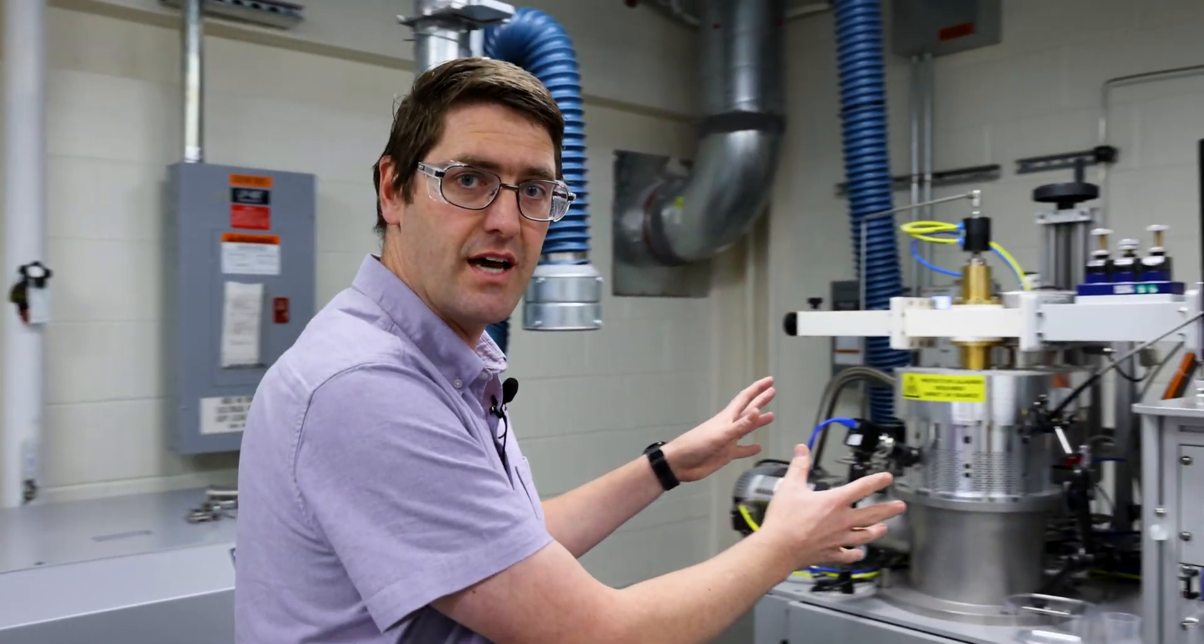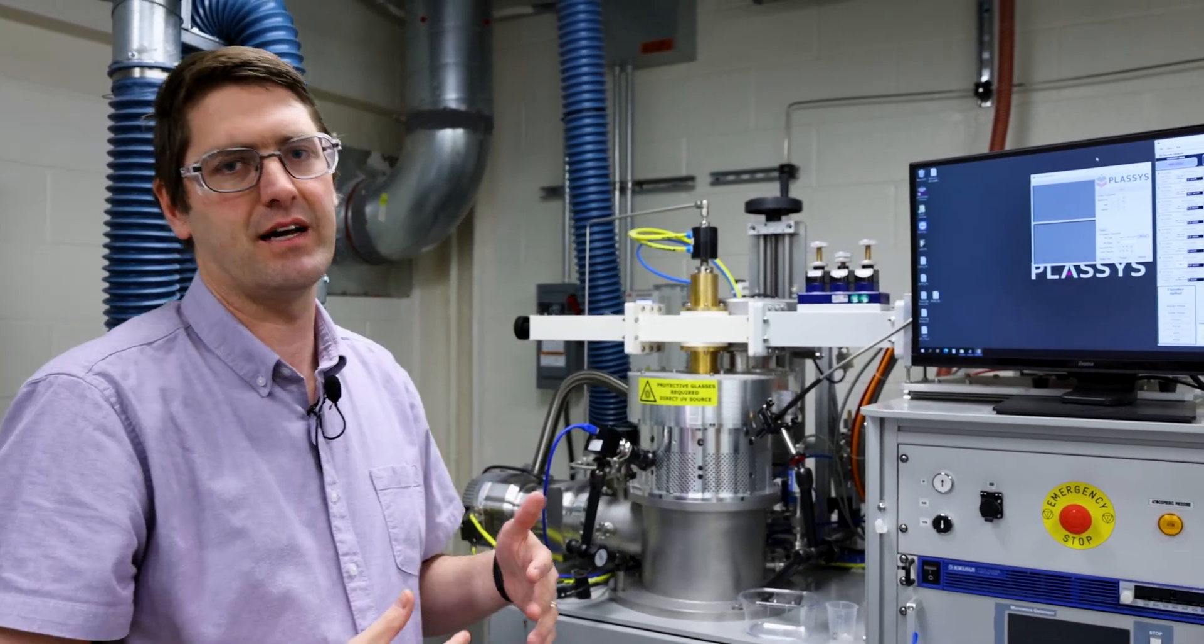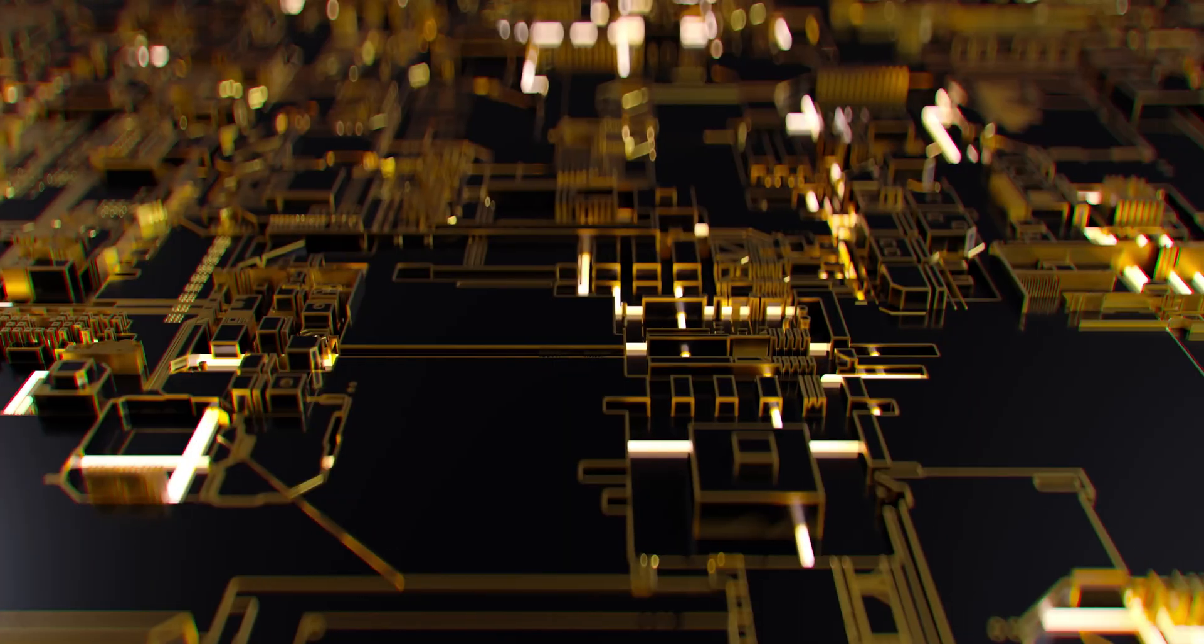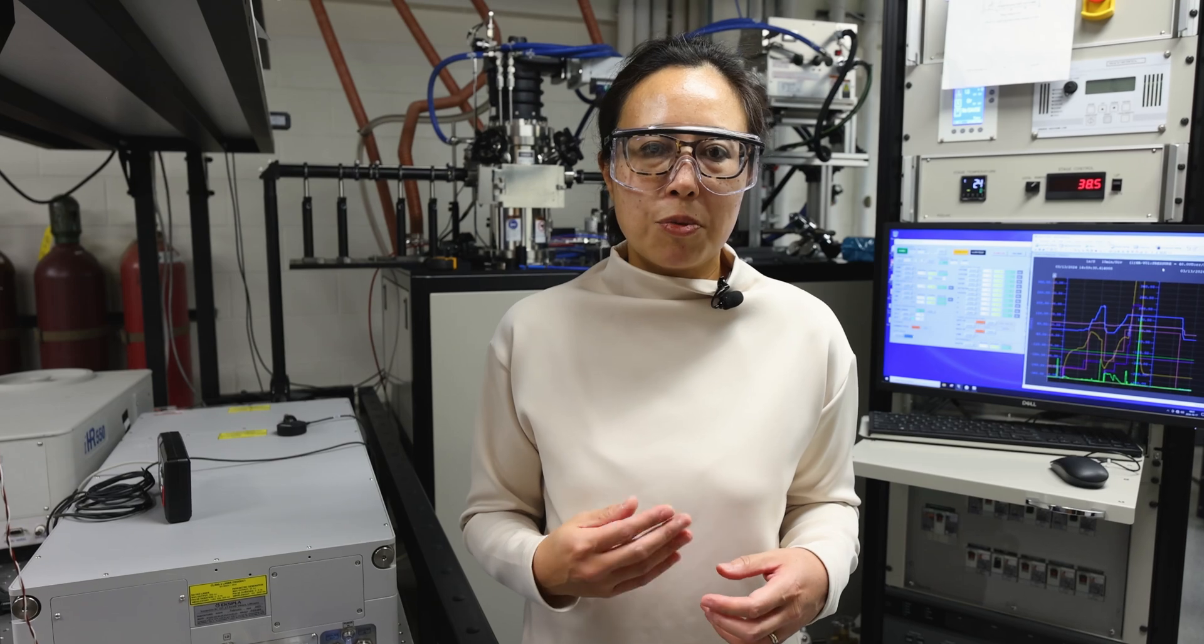In the second machine, we're deliberately adding different dopants. It looks the same, but we have different gases flowing in. We're deliberately doing that to change the properties of the diamond. When we combine these two things together, we can make some really interesting quantum and microelectronics devices. This is a critical step forward in making sure we have domestic capabilities to grow state-of-the-art material.